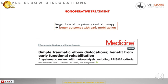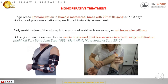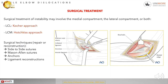It is very important to remember that for non-operative treatment, the literature supports better outcomes with early mobilization — the elbow must move. The hinged brace should be worn for no more than 7–10 days, and for a good functional result, a semi-constrained hinged brace associated with early mobilization is recommended.